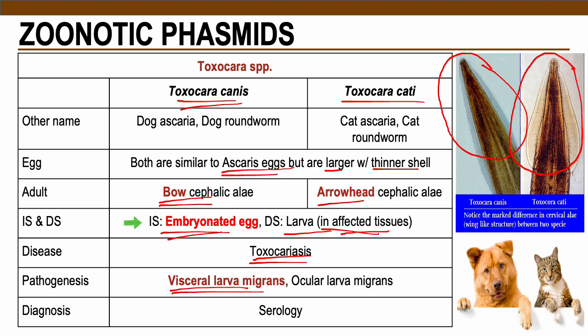It can also attack the eye area of the patient, especially when humans are accidentally affected with this particular parasite. This is called ocular larva migrans.